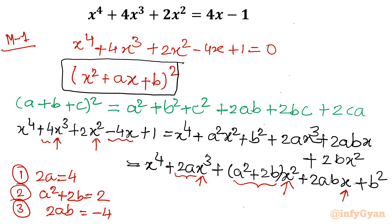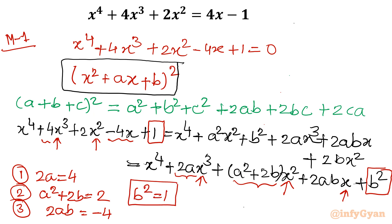Now one important thing — there is a b² term. If I equate it with the constant term, I can write b² equals 1, which gives the strong result that b equals either plus 1 or minus 1.